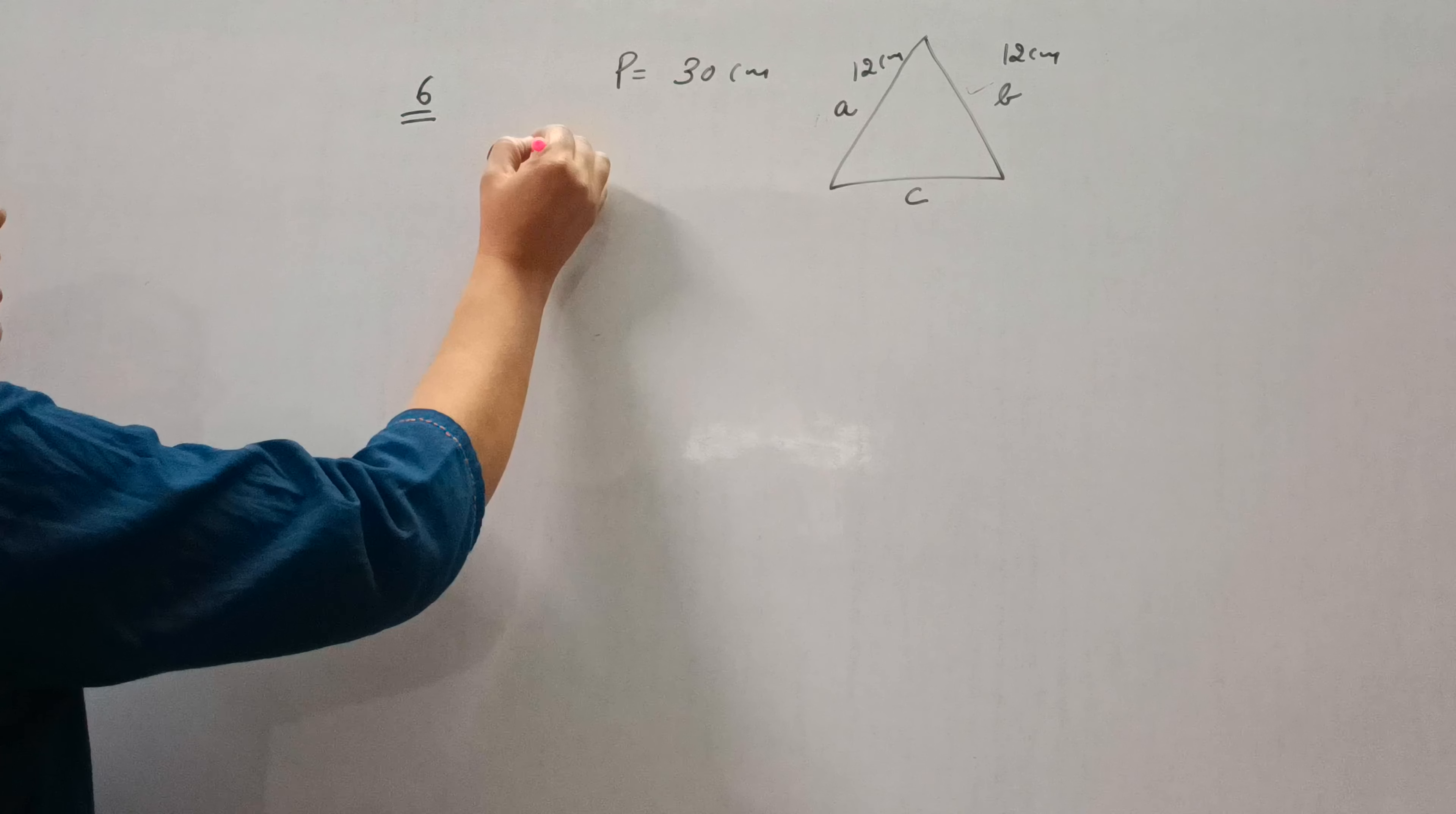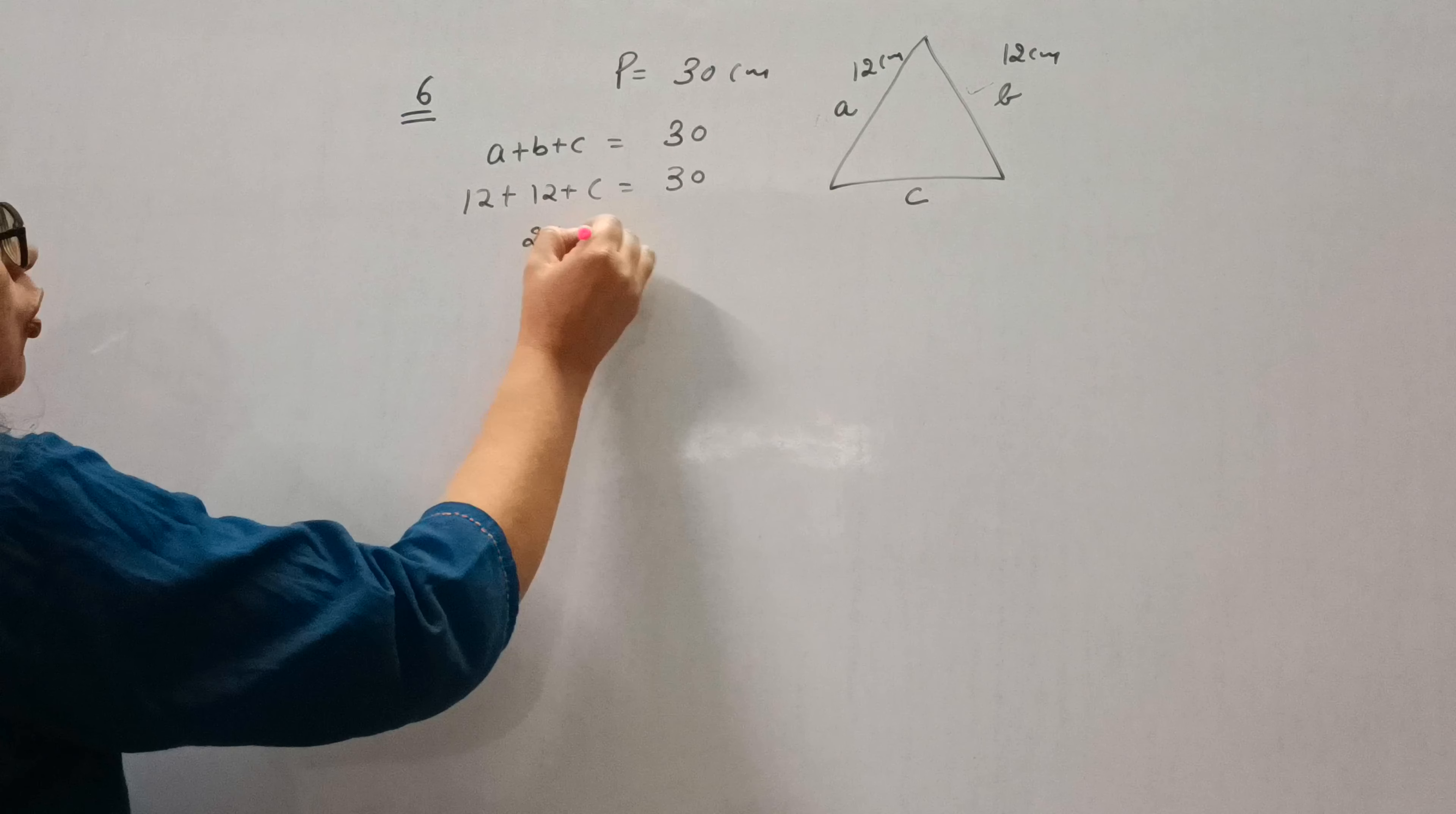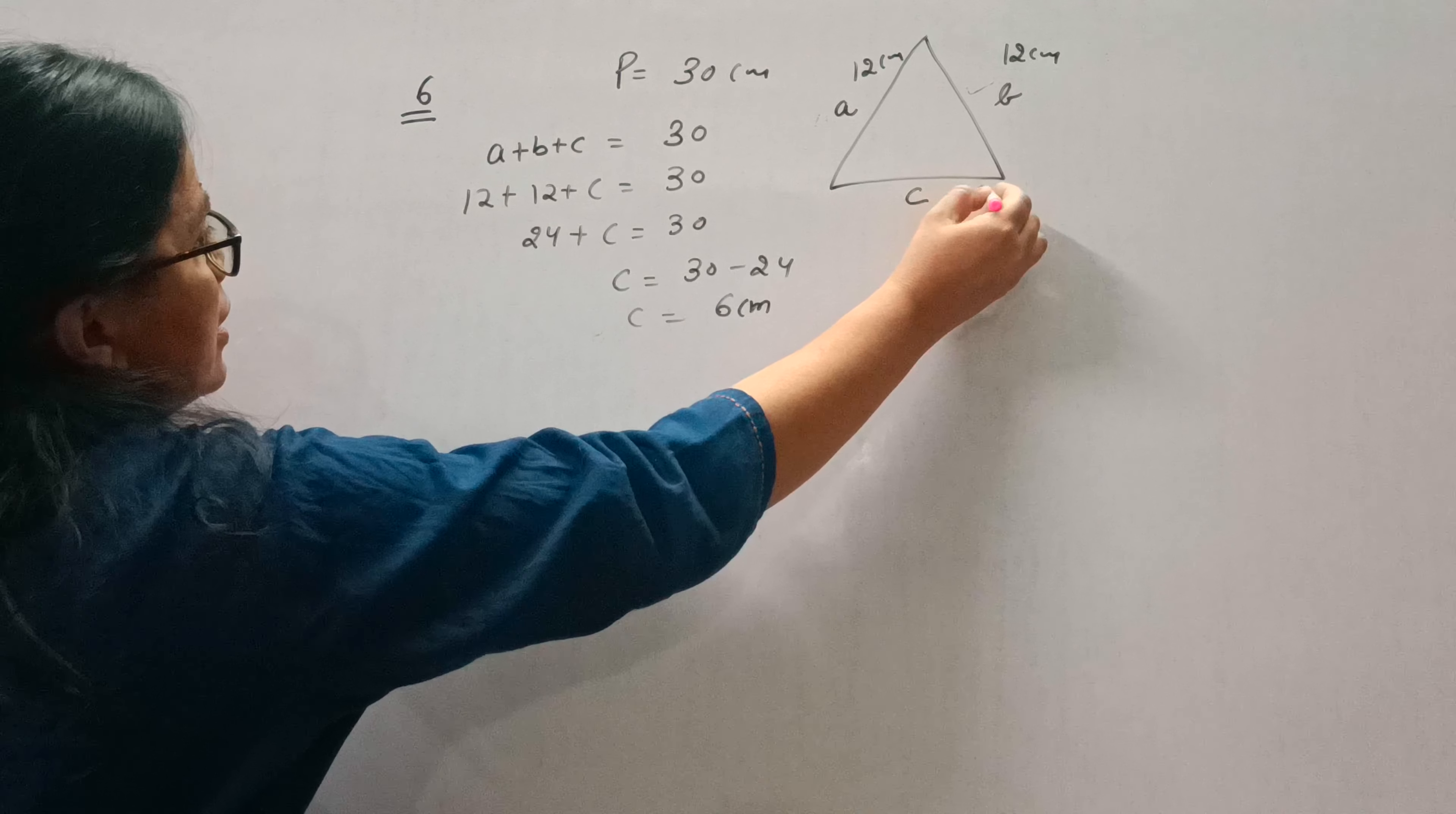We know perimeter is A plus B plus C. A is 12, B is 12, so let's find C. 24 plus C equals 30. C will be 30 minus 24, that is 6. So the third side is 6 cm.